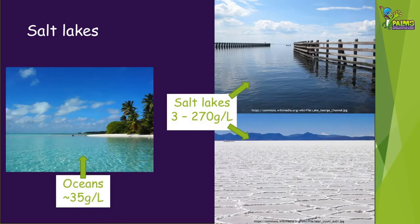The average salt concentration in seawater is 35 grams per litre, whereas salt lakes can range anywhere from 3 to 270 grams per litre. The salt concentration in salt lakes will also depend on the water level in the lake, which will change with the seasons and weather events such as storms and floods.